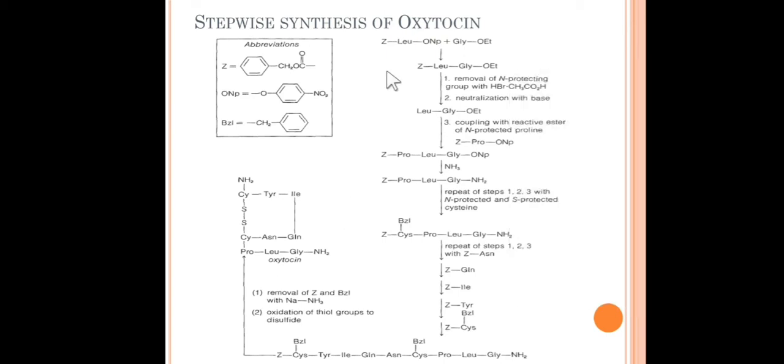We can start with this CBZ-protected amino acid, and on the other hand we have this ortho-nitrophenol protected C-terminus. The first step is to remove the protecting group with HBr in acetic acid, and then we get this desired first dipeptide.